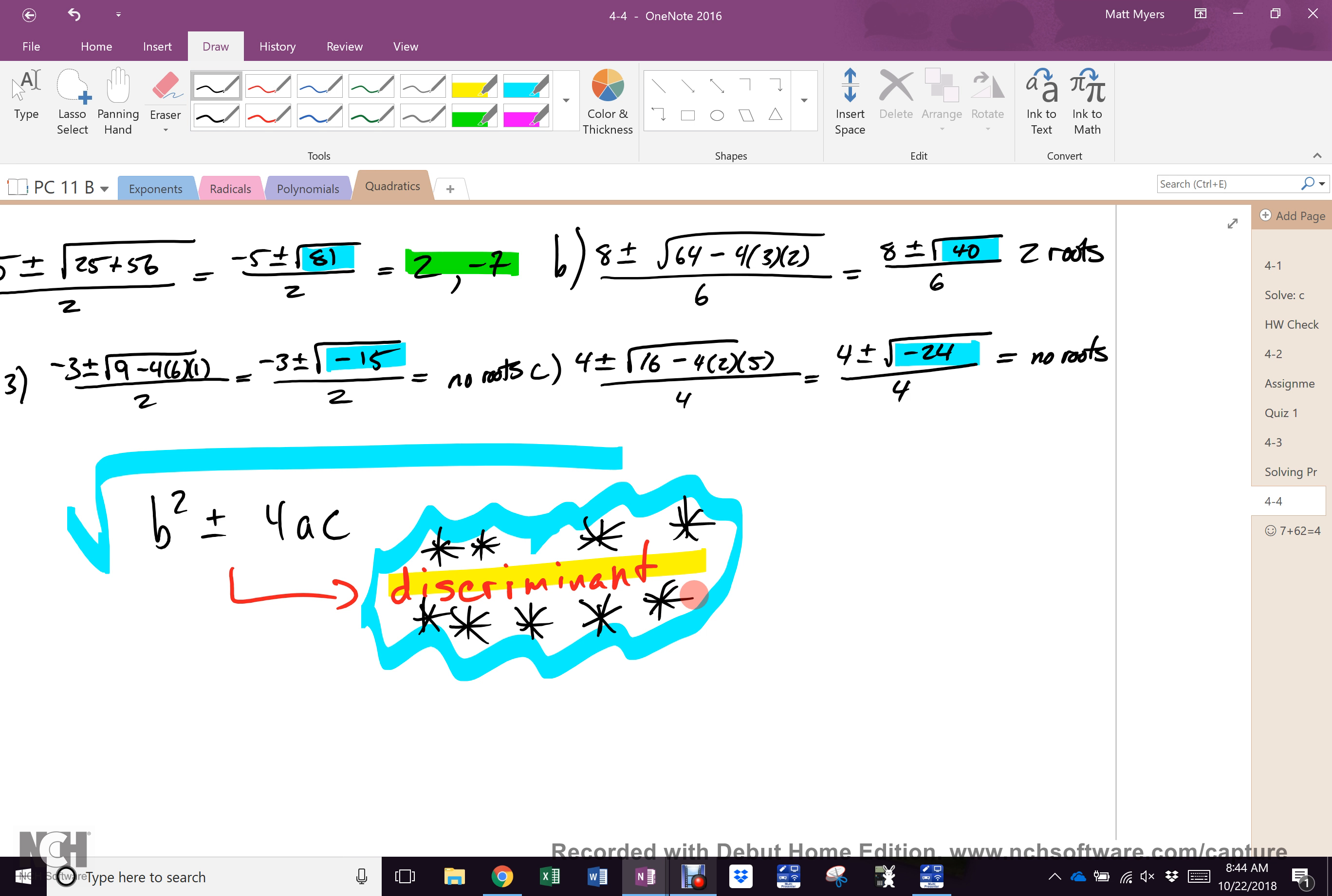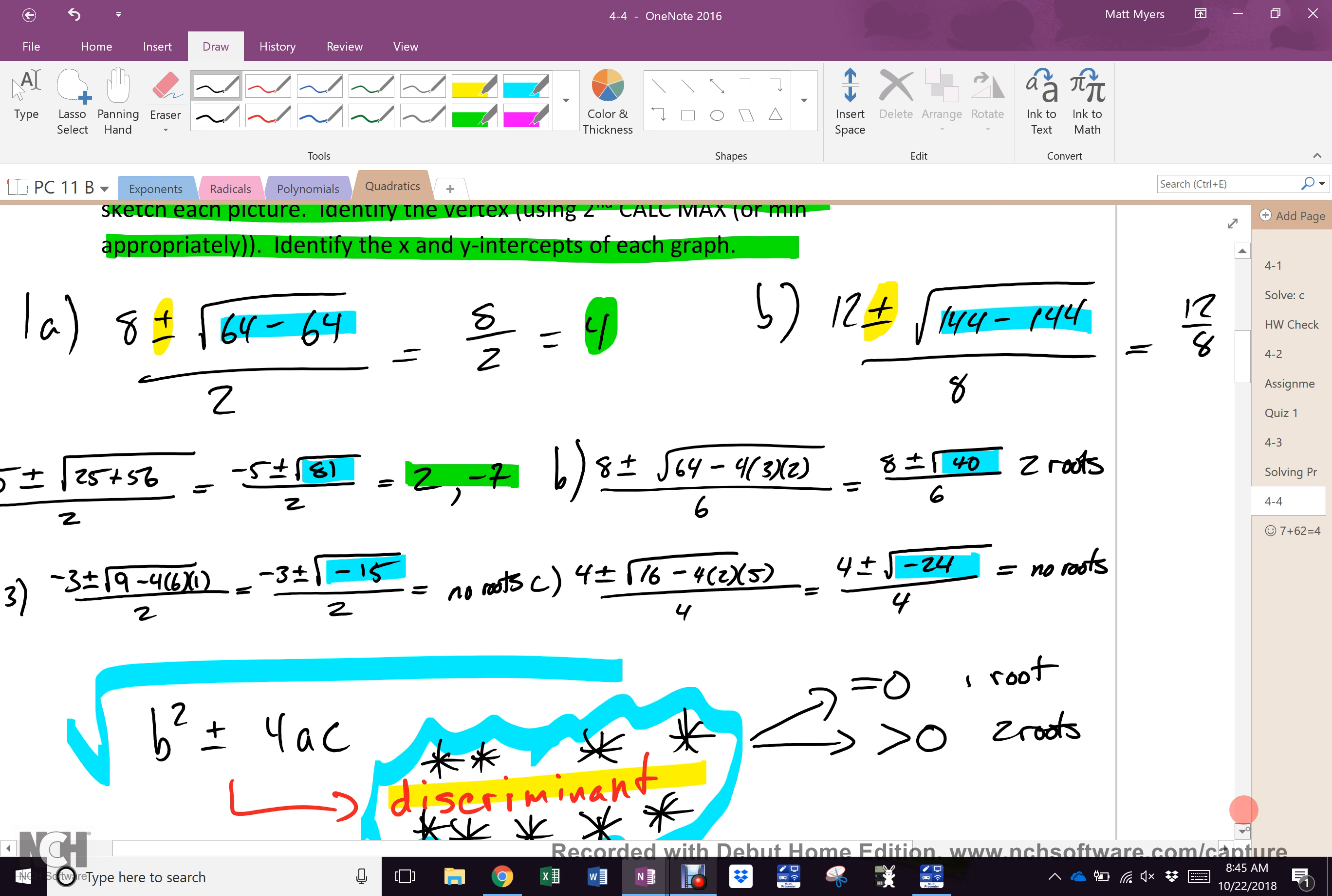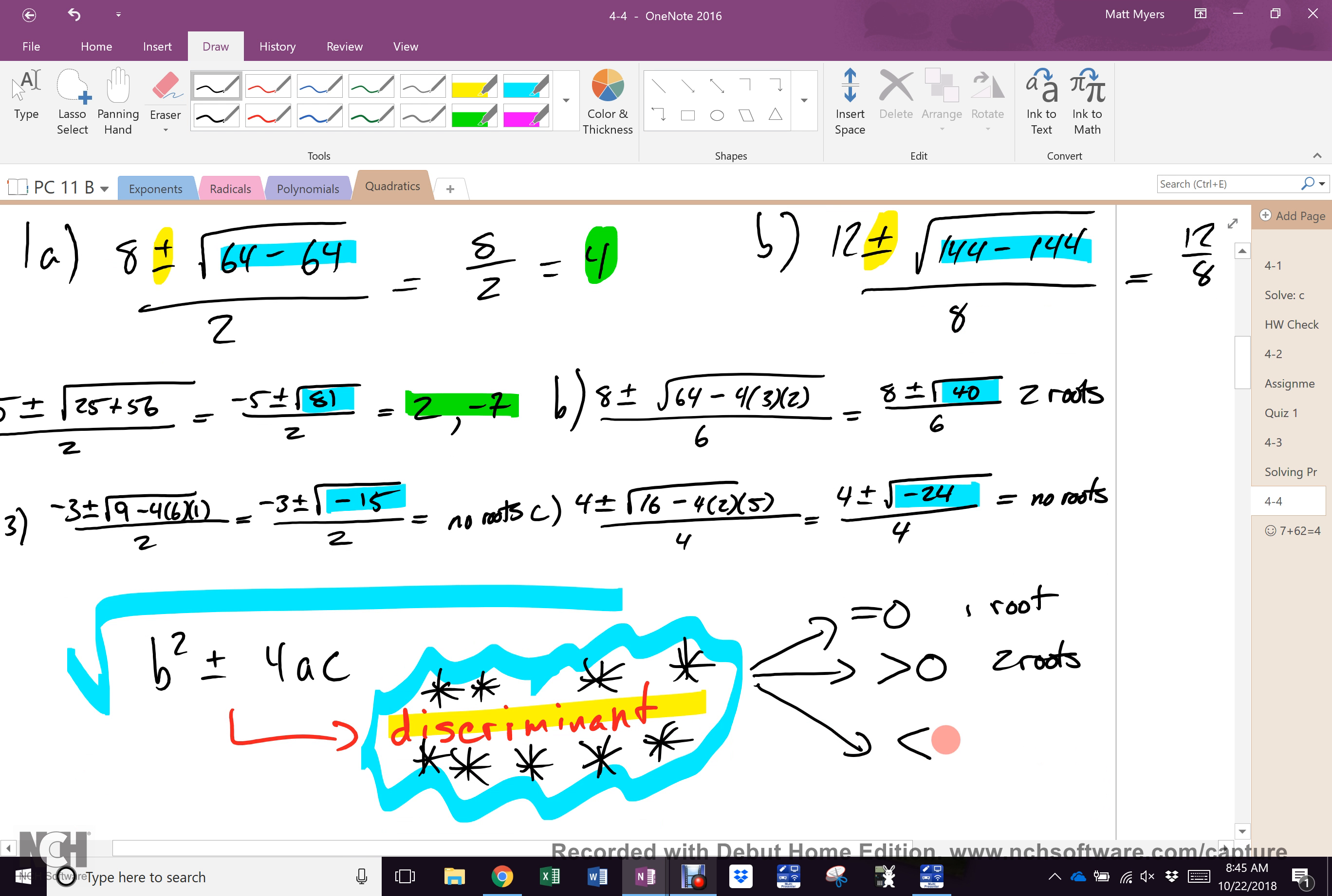Discrimination, of course, means you exclude things, yes? So the discriminant tells us what? What if it was zero, what happened? How many roots? One root. What if it was greater than zero? Two roots. What if it was less than zero? No roots.